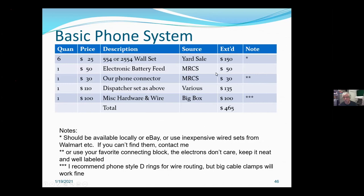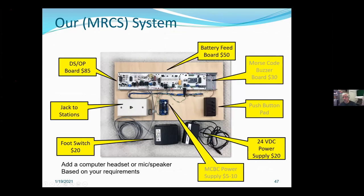Here's a fully operational system — this is actually the demo I used at NMRA, the last time we had an NMRA, which was Salt Lake. It's got one of the dispatcher boards, a battery feed board, and a little code buzzer, which is just a buzzer system that taps out each station's name in railroad Morse. You could do that, but generally in a CTC system there would be no reason to. One thing it does is give each station a distinct ring. You don't need to do that, but it's cute and railroady.